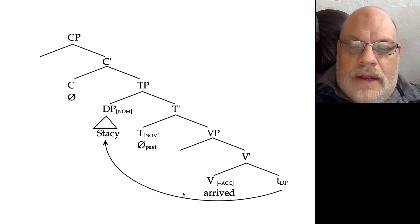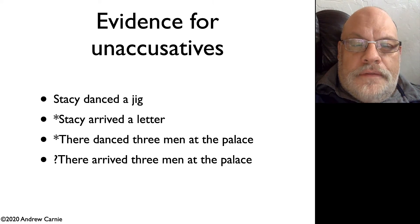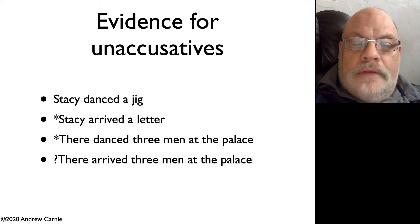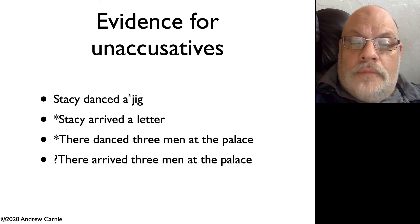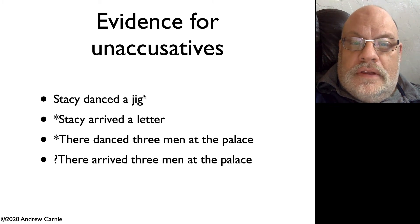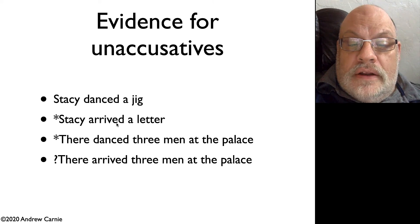Let's look at what kind of evidence we might have for this analysis, where themes are generated low and then move into subject position for case purposes. First of all, there's a big difference between unergative and unaccusative verbs as to whether they allow an optional object. Take for example: Stacy danced a jig. This is acceptable alongside Stacy danced, so a jig appears to be an optional object taking accusative case. Unergative verbs allow objects in these positions even though the verbs are intransitive. By contrast, unaccusative verbs never allow an object, which is precisely what you predict if these verbs are unable to assign accusative case.